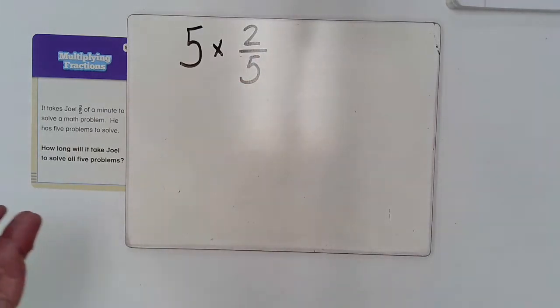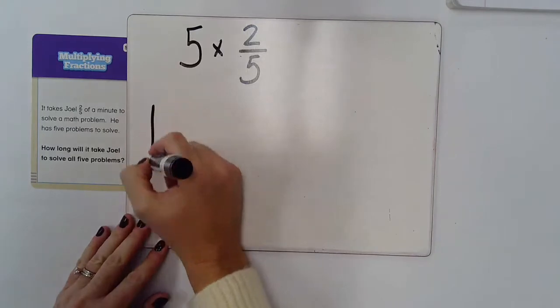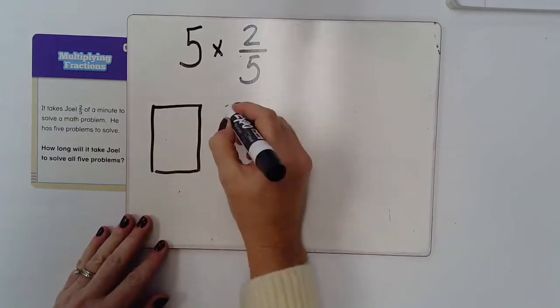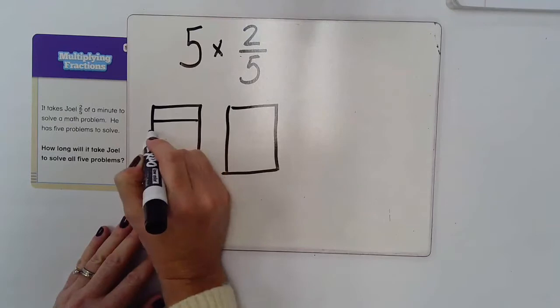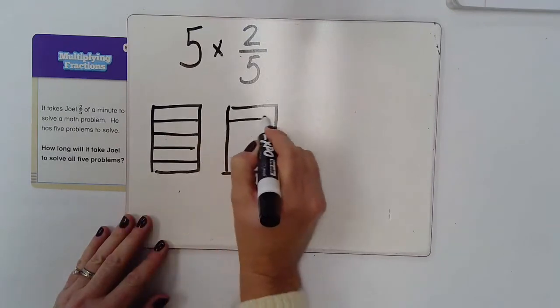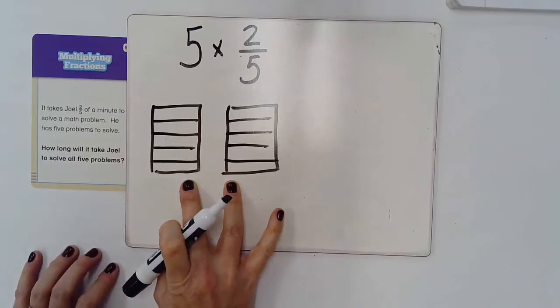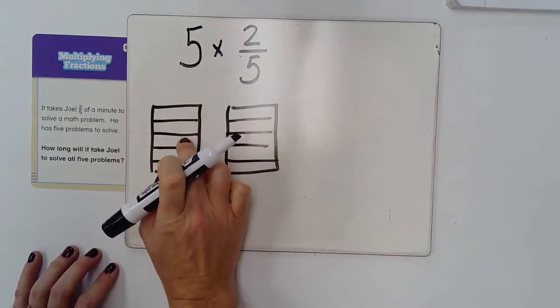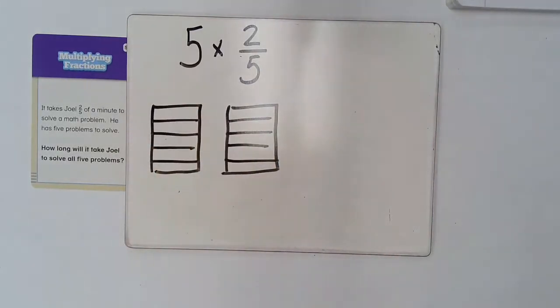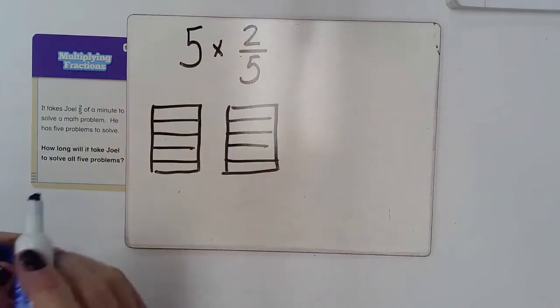So I'm going to draw some boxes here. I have two holes and they each have five parts. One, two, three, four, five. And then I'm just going to shade in five groups of two-fifths.